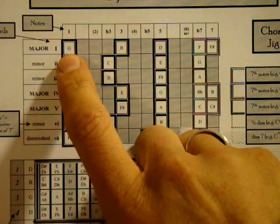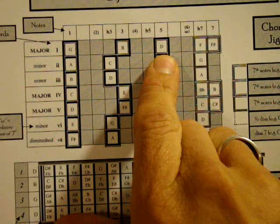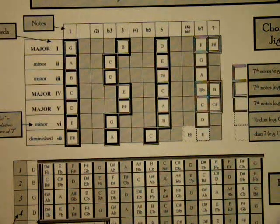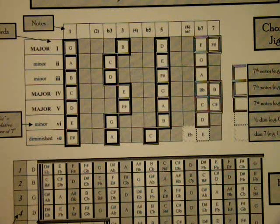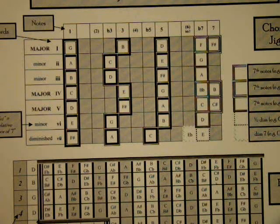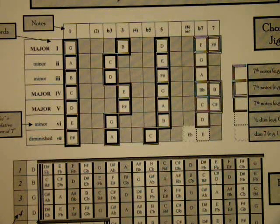A G major is built out of the notes G, B, and D. A minor is built out of the notes A, C, E. B minor, etc. Those chords are so important because they all sound good together. Here's a G chord — G major, A minor, B minor, C major, D major, E minor — F sharp major is not played so much. And then back to G.